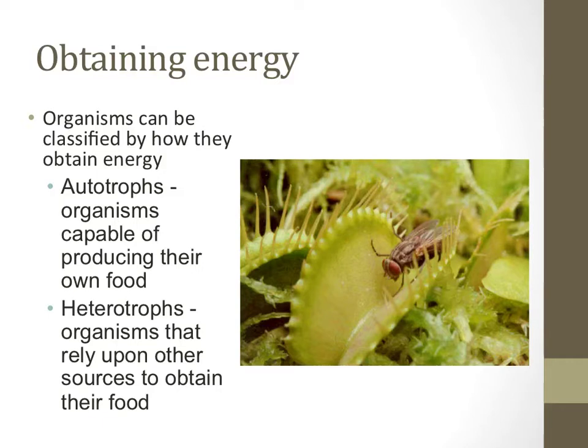There are two different organisms shown in the picture to the right, a fly and a venus fly trap. The fly is an animal, and all animals eat other organisms as a food source, so they are heterotrophs. How about the venus fly trap? Is it an autotroph or a heterotroph? And how could you scientifically test which one that it is?